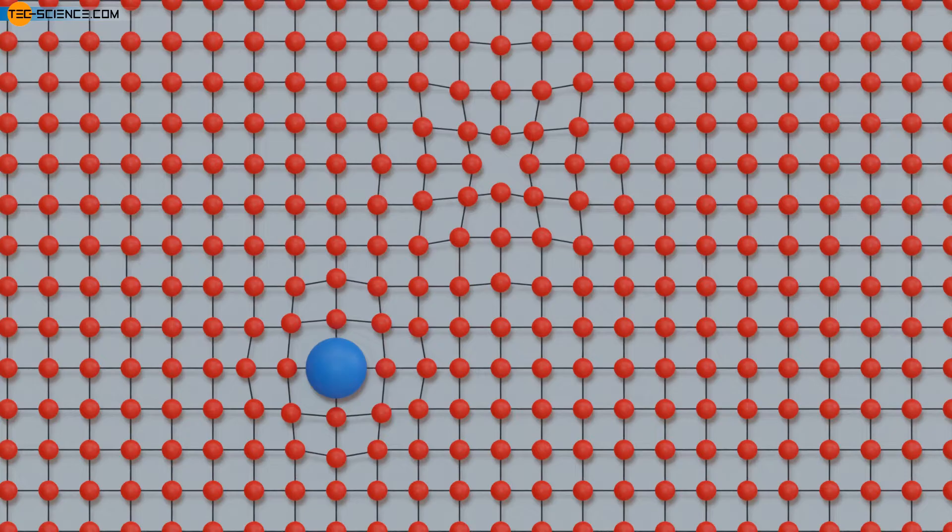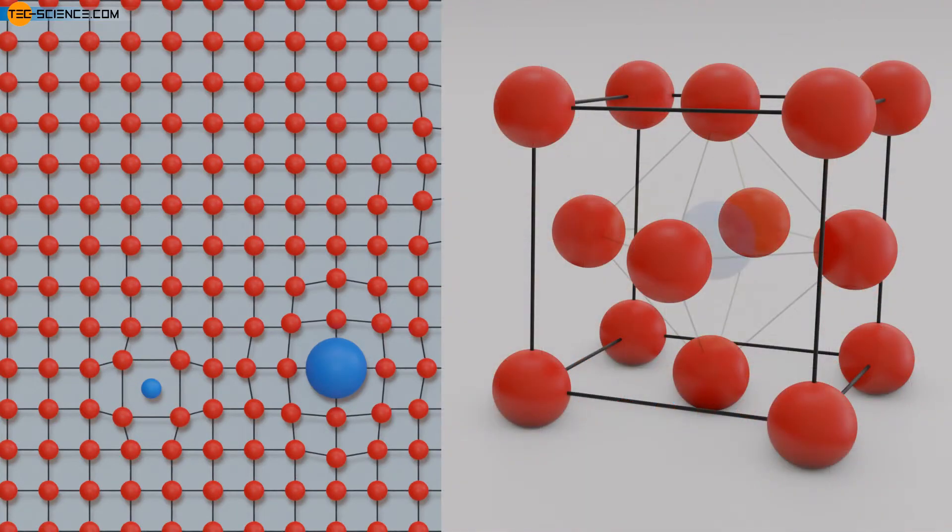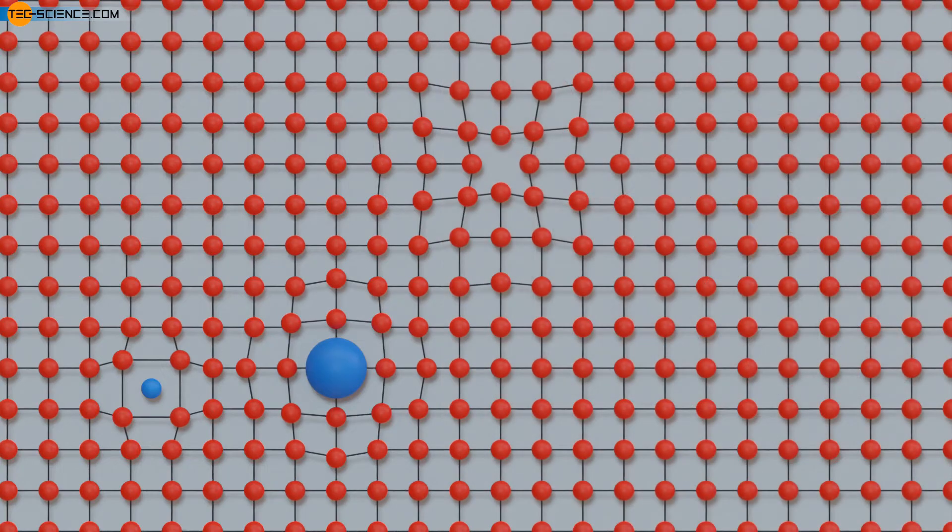Another way to arrange foreign atoms is to place them in an interstitial space, for example in the center of a face-centered cubic unit cell. In this case, one also speaks of the so-called octahedral site. Atoms that are not located on regular lattice sites, but are intercalated between them, are also called interstitial atoms.